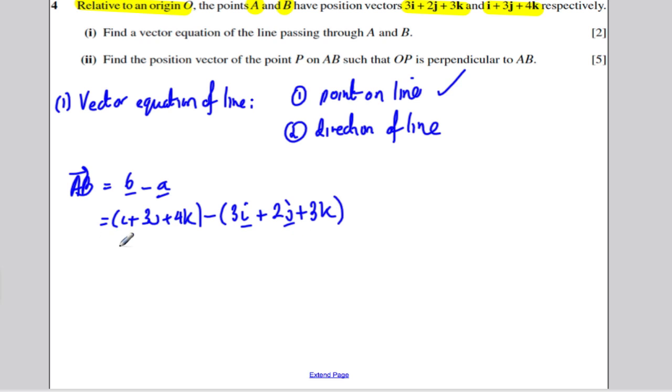And we take those away from each other and we get minus 2I, 3 minus 2 is plus just 1J and 4 minus 3 is plus 1K. That's the direction of the line and we choose any point on the line. Let's choose the point A.